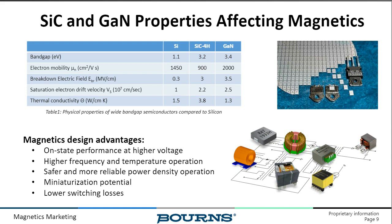As applied to magnetics design, the key implications are: on-state performance at higher voltage, higher frequency switching, and higher temperature operation. The core of today's presentation is really captured in one sentence — higher frequency and how does that affect magnetics design — while still maintaining safe, reliable, power-dense operation as small as possible with the lowest losses in any given magnetic component.